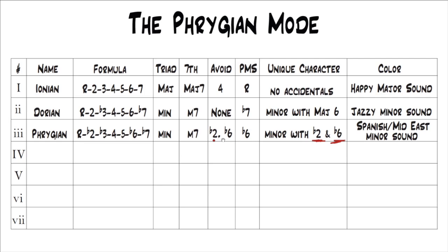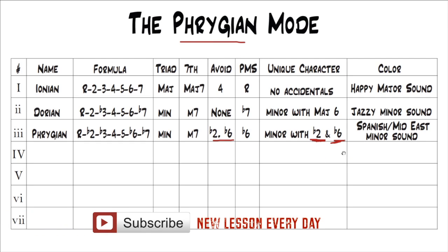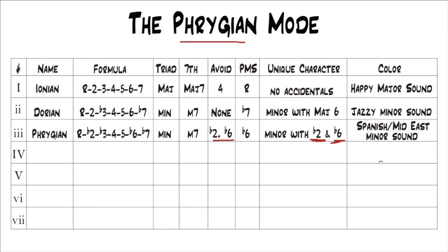It's kind of interesting that the avoid notes are also the unique characteristics. But avoid notes don't mean not to play them — it just means they're not good landing tones because they're dissonant. They do create the sound of this mode, so definitely emphasize them if you want to bring out the sound of the Phrygian mode. The color of this mode is Spanish flamenco or a Middle Eastern type sound — a very dark minor sound. Unlike the Dorian mode, which is a bright, jazzy minor sound, this is more of a world music type sound — Spanish flamenco or Middle Eastern.